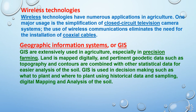Another use of information technology is wireless technology in agriculture. Wireless technologies have numerous applications in agriculture; one major usage is the simplification of closed-circuit television camera systems. The use of wireless communication eliminates the need for the installation of coaxial cables. After that, Geographic Information Systems (GIS) are extensively used in agriculture, especially in precision farming, where the land is mapped digitally and pertinent geodetic data such as topography and contours are combined with other statistical data for easier analysis of the soil. GIS is used in decision making such as what to plant and where to plant, using historical data, sampling, digital mapping, and analysis of the soil.